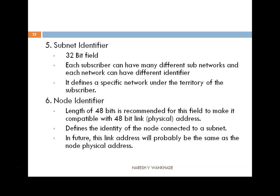The node identifier field is 48 bits to make it compatible with the 48-bit link address, also known as the physical address. We often call this physical address a MAC address — MAC stands for Media Access Control. The data link layer in the OSI reference model or TCP/IP reference model is responsible for this address. It defines the identity of the node connected to your subnet, and in future this link address will probably be the same as the node's physical address.